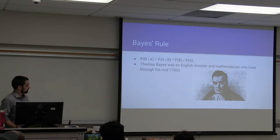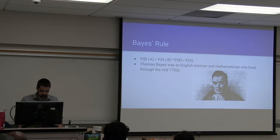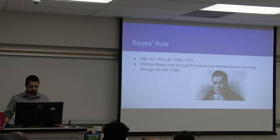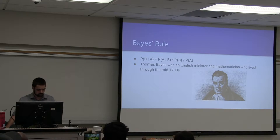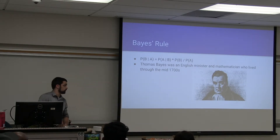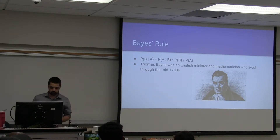And then we have Bayes' rule. Thomas Bayes was an English minister and mathematician who lived throughout the 1700s. It's widely believed that the paper describing Bayes' theorem was found after he died, and that he was trying to use this theorem to prove the existence of God through mathematics. Bayes' rule states that the probability of B given A equals the probability of A given B times the probability of B, over the probability of A.